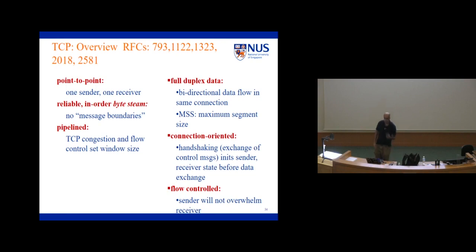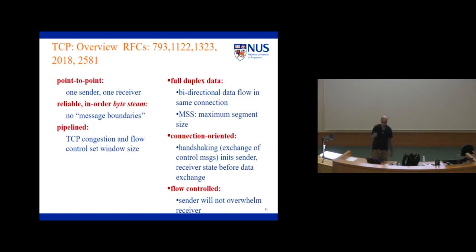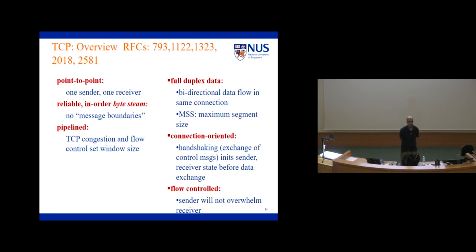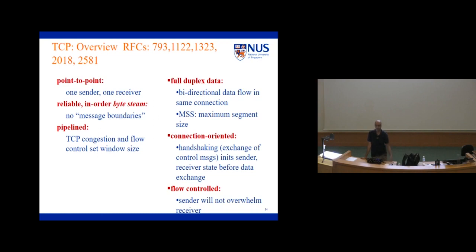TCP has evolved over time. The oldest version is RFC 793. TCP is point-to-point — a TCP connection connects one source to one destination, not one-to-many. It is a reliable protocol, which means if there are any packet losses, TCP will recover them for you. It's a combination of go-back-N and selective repeat in some sense. Also, this is what is called a byte stream protocol — whatever the application gives to TCP, TCP thinks of it as a whole string of bytes. It doesn't know any structure or where the boundaries are for your data.